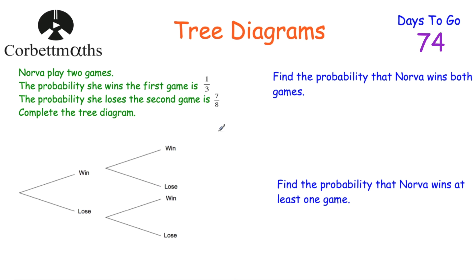Now let's look at our last question, which involves fractions instead of decimals. Remember that probabilities can be given as fractions, and when multiplying fractions you just multiply the numerators together and the denominators together. Nova plays two games: the probability she wins the first game is 1/3, the probability she loses the second game is 7/8. Complete the tree diagram, find the probability she wins both games, and find the probability she wins at least one game.